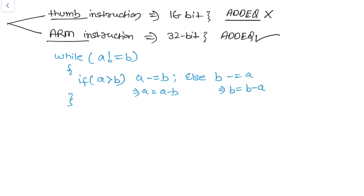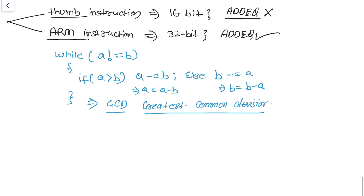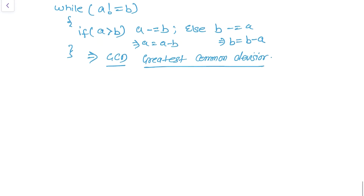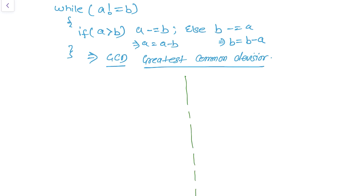If you notice carefully, you will find that this is a program for GCD (Greatest Common Divisor). Now we are going to write assembly code for this, and that assembly code will be written for Thumb mode as well as for ARM mode instruction set.